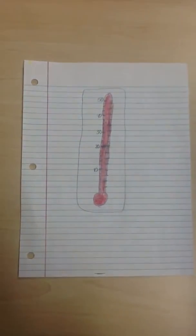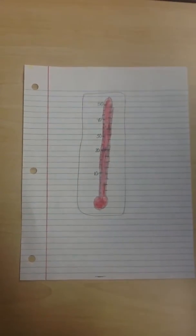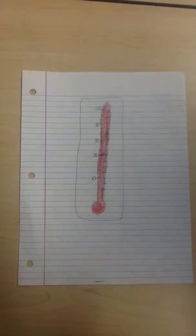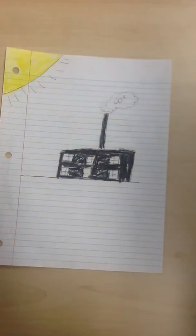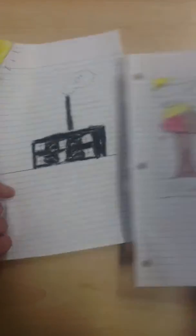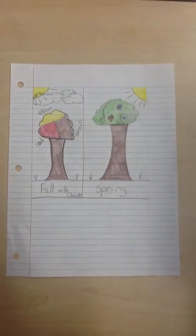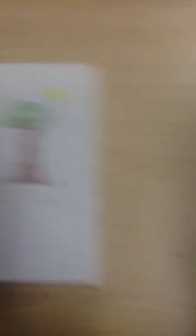Global warming scientific explanation: a gradual increase in overall temperature of the Earth's atmosphere, generally attributed to greenhouse effect. As you see here, caused by increased levels of carbon dioxide, chlorofluorocarbons, and other pollutants.